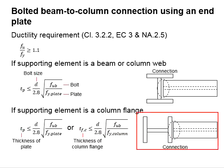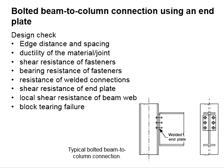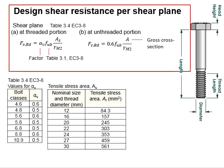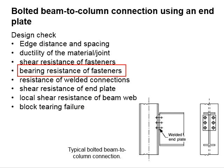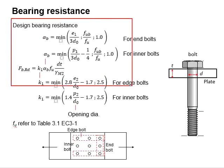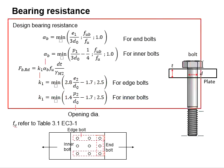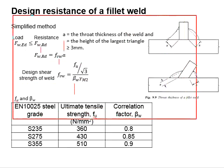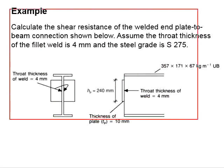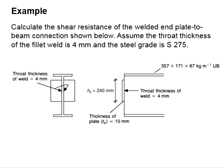The connection is considered ductile upon fulfillment of either one of the requirements. Next, the shear resistance of the bolt is determined from the equations given, as discussed in our previous video. The bearing resistance of the bolt hole and the resistance of the welded connection are also determined from the respective slides and examples discussed in our previous video.